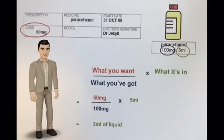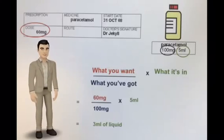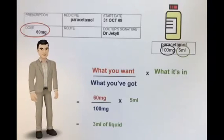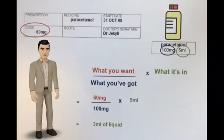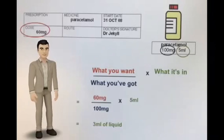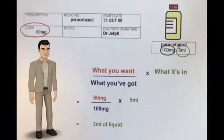Your patient has been prescribed 60mg of paracetamol. Paracetamol is available as a liquid, 100mg per 5ml. How do we calculate how much? Use the formula: what you want over what you've got, times what it's in. What you want is 60mg, divided by what you've got — 100mg — times what it's in — 5ml. That gives you 3ml of liquid.